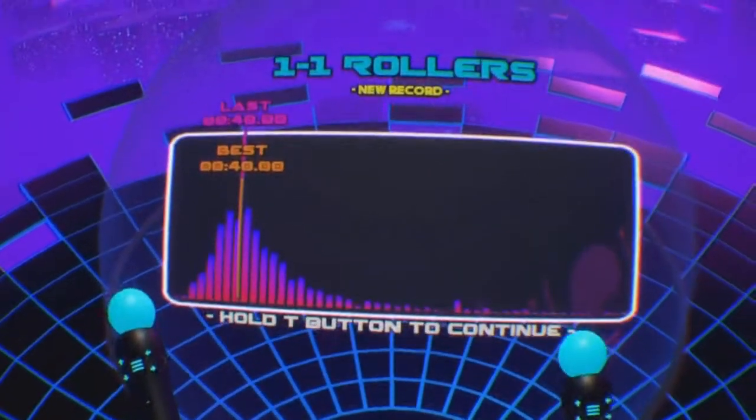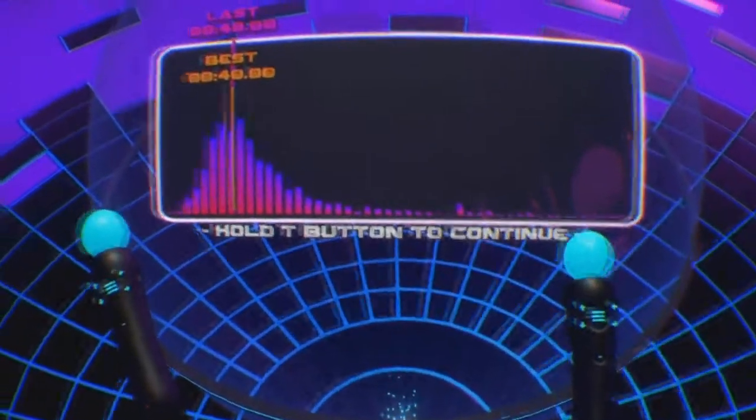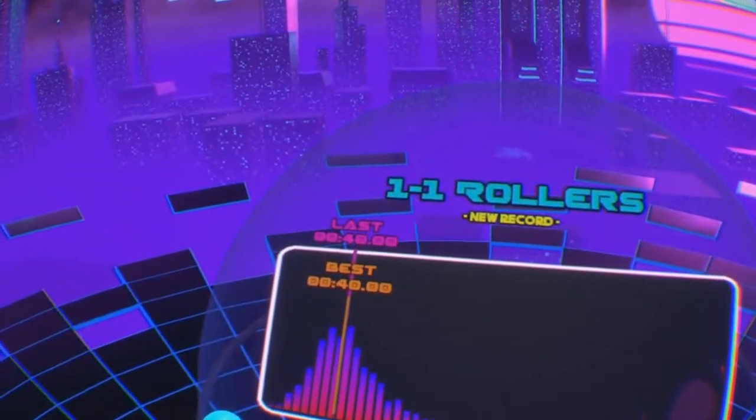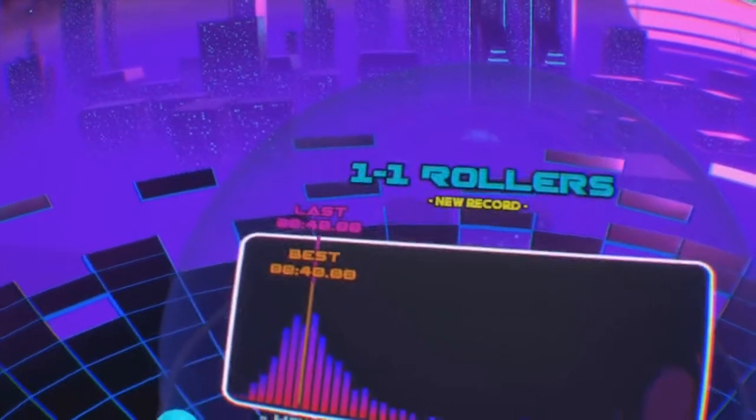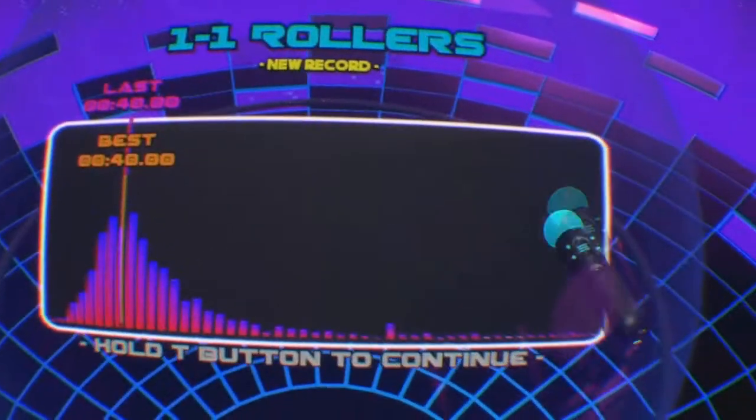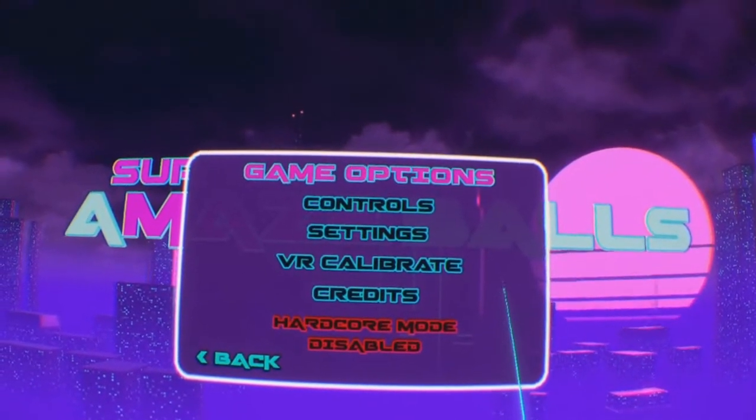Each stage has cross-platform leaderboards for you to get a high score in, but they are not presented in a traditional form. Player scores are seen as bars. The bigger the bar, the more people completed the track in that time. It does make your score feel less personal overall.